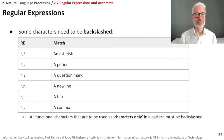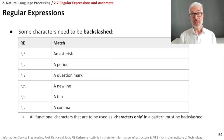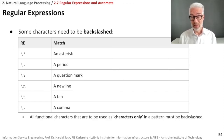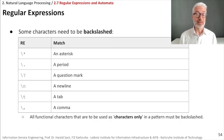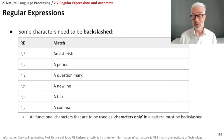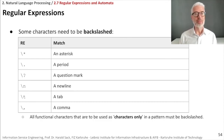Some characters have special functions in regular expressions. To search for them literally, you must escape them using a backslash. For example: \* for a literal asterisk, \. for a literal period, \? for a literal question mark, \n for a newline, \t for a tab, and \, for a literal comma.